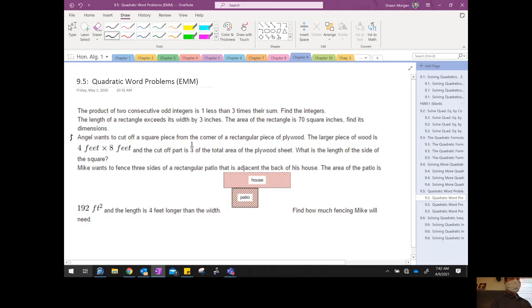All right. I think we've got time for one more. Let's see if we can do one more. Angel wants to cut off a square piece from the corner of a rectangular piece of wood. The larger piece of wood is a 4 by 8 sheet of plywood, apparently. Okay. It's a standard sheet of plywood. And the cutoff part is a third of the total area of the plywood. Okay. Now, what's a third of the total area of that 4 by 8 sheet? Okay. Come on, quick. What's a third of 32? A third of 32 is 14? Nah. It's 32 over 3. 32 thirds. Is it okay to have fractions? Heck, yes, it is.